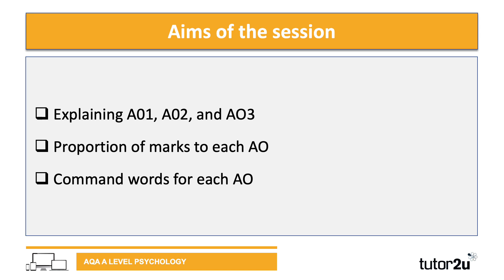In today's session we've had a look at explaining AO1, AO2 and AO3 — the three assessment objectives in the linear A-level psychology course — the proportion of marks for each assessment objective across the papers, and lastly command words to identify for your assessment objectives.